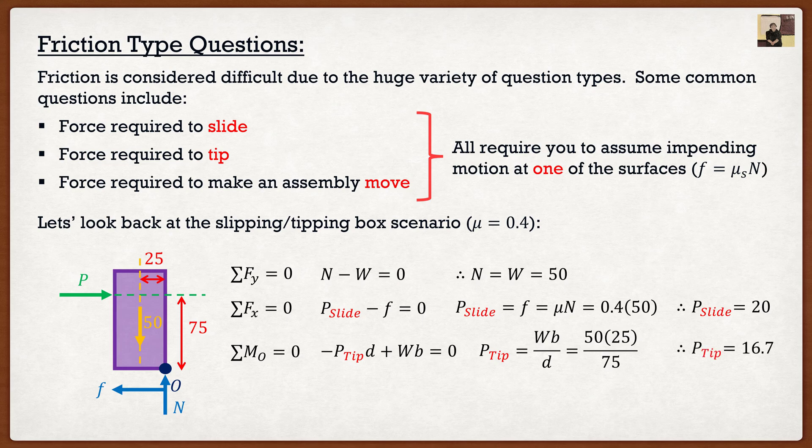So if we were to look at this, we can actually say, okay, because our tipping force or the force required to make it tip is lower than the force required to make it slide, tipping will occur before the box slides and it will occur when our P is equal to 16.7.